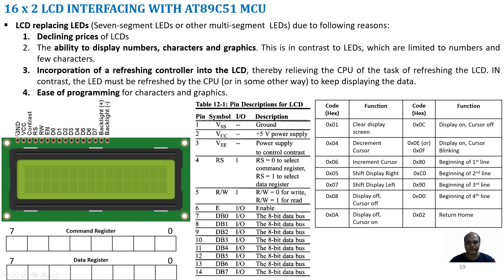The first pin is ground and the second pin is VCC — these two are used for providing supply to the LCD. The third pin is the contrast pin, where we connect a potentiometer. By varying the potentiometer, the voltage given to this pin can be varied. By changing the voltage on the contrast pin, we can vary the contrast of the LCD. If we give 5V it will give low contrast; if we give 0V it will give high contrast.